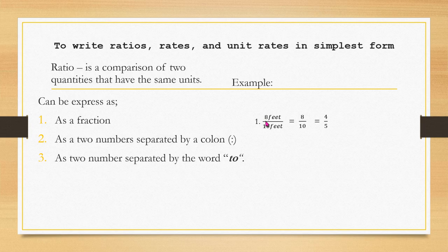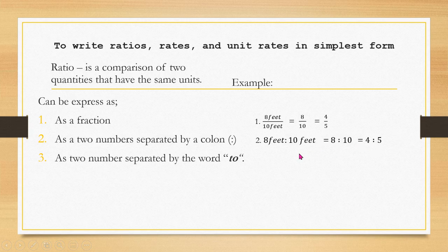That fraction 8/10 can be simplified to 4/5. The second way to express a ratio uses the colon symbol: 8 feet to 10 feet is written as 8:10, or simplified to 4:5. The third way uses the word 'to': 8 feet to 10 feet — remove the units — becomes 4 to 5.